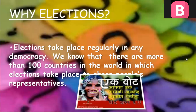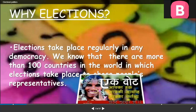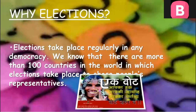Why elections? Why do we need elections? Elections take place regularly in democracy. As we have discussed in chapter one, there are more than 100 countries in the world in which elections take place to choose people's representatives. We also read that elections are held in many countries that are not democratic — China is a basic example, where they have only a one-party system but still conduct elections. So why do we need elections? Just imagine a democracy without elections.